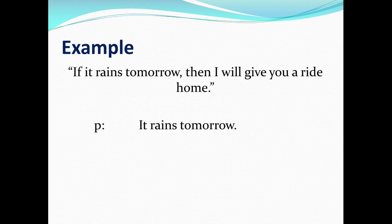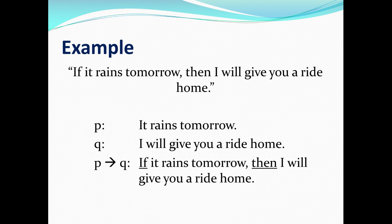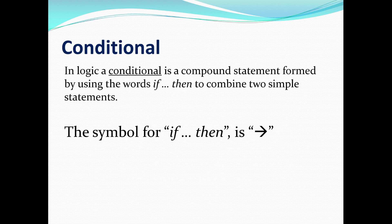P can be the statement 'it rains tomorrow,' and let Q be the statement 'I will give you a ride home.' If we want to use the statement 'if it rains tomorrow, then I will give you a ride home,' we need a special symbol — an arrow going to the right. Notice that the words 'if' and 'then' are not part of the statements P and Q. This type of if-then statement is referred to as a conditional statement in logic — a compound statement formed by using the words 'if' and 'then' to combine two simple statements.